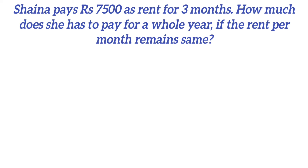In the question, it is given that Saina is paying rent for 3 months and the cost is 7500. They are asking how much she has to pay for the whole year, that is for 12 months. Here we know only for 3 months. If we know for 1 month, we can find out for 12 months — we just multiply by 12. But how to find out for 1 month?